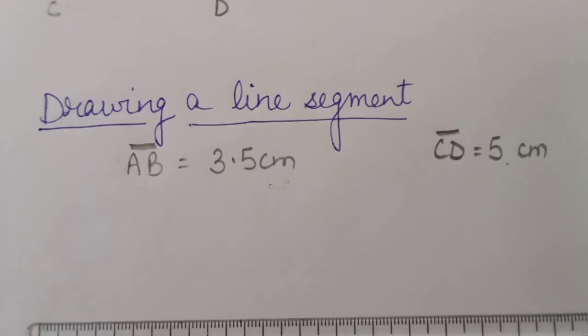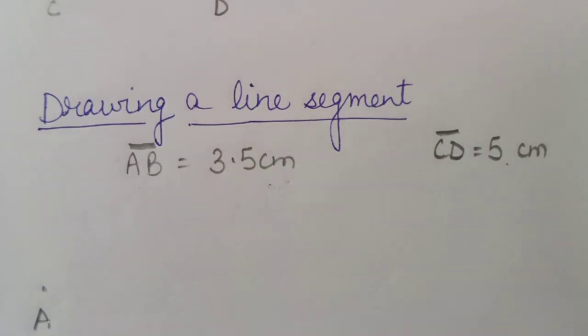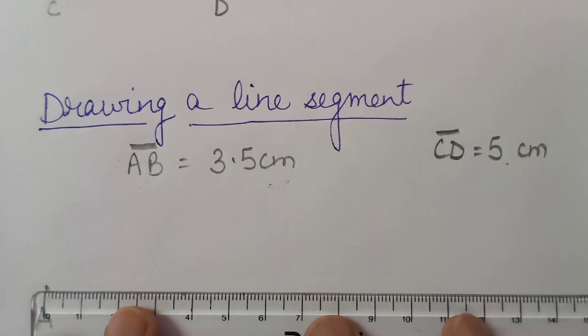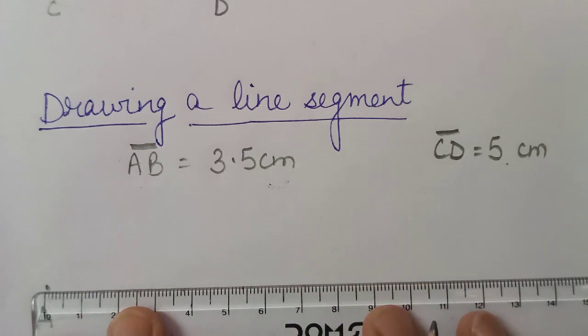So what will you do? You will mark a point A where you want, where you can mark a point. So here we start from 0 which is the point. Here we will keep the scale at 0.